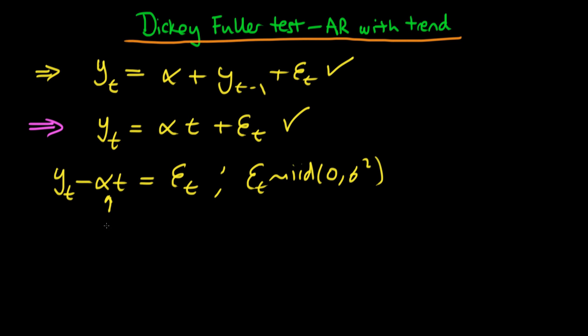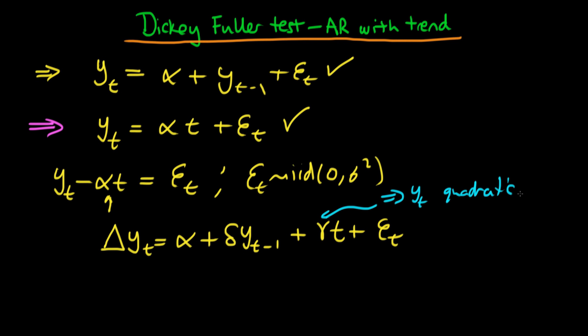The way to go about this is to do a regression of the change in y_t on alpha plus delta times our ordinary y_{t-1} term, but then we actually include a time trend here, gamma t, plus our error term. This kind of implies that y_t is going to actually itself be quadratic in t as opposed to being linear.